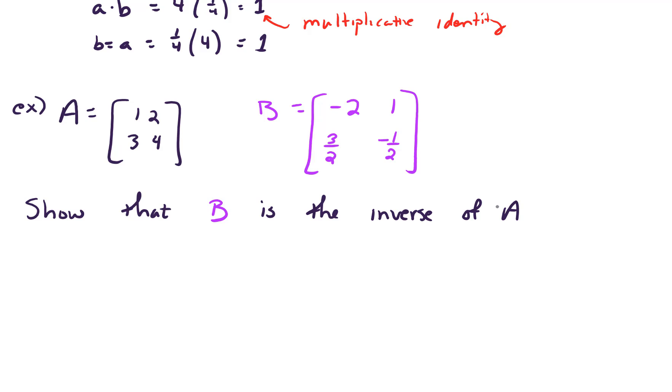Or conversely, you could show that A is the inverse of B. Either way we do it, we need to look at the product A times B. This is just matrix multiplication, [1, 2; 3, 4].